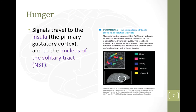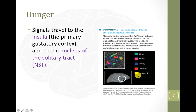The signals that travel to the insula and to the nucleus of the solitary tract are consistent across time. In a given individual, if they eat different flavors on Monday, you'll see activity in specific areas of the insula, and if you test them again on Wednesday, the same areas of the brain will light up corresponding to the same tastes. It looks like there really is a set of neurons in the insula involved in detecting sweet flavors, another set for sour flavors, and so on.